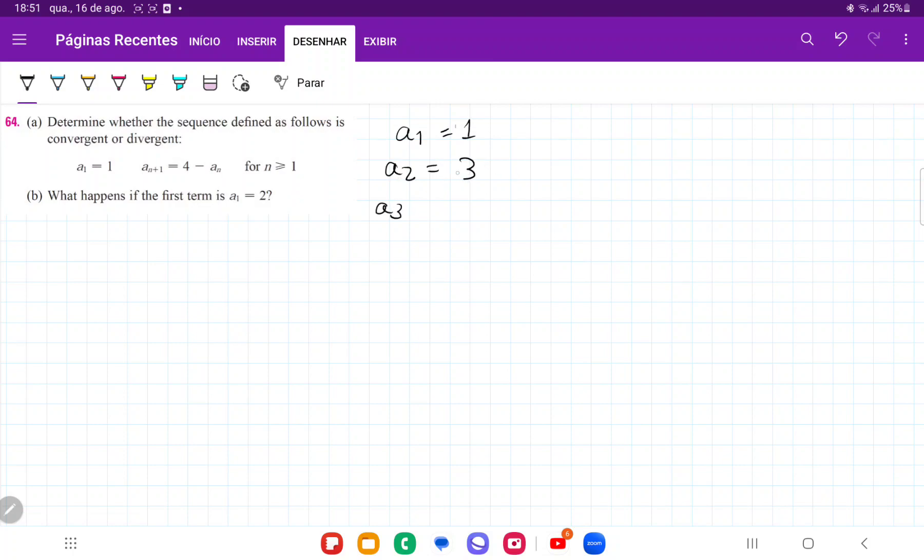And so a3, if we go to the next, is going to be equal to 4 minus the previous. If we were at a2, then a_{n+1} is a3, which equals 4 minus a2. So 4 minus 3 is equal to 1.